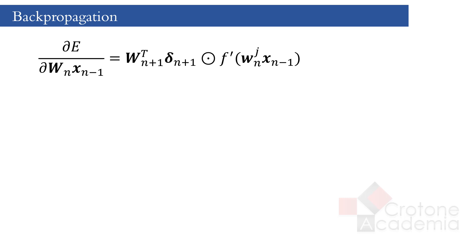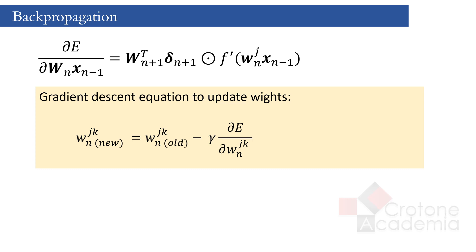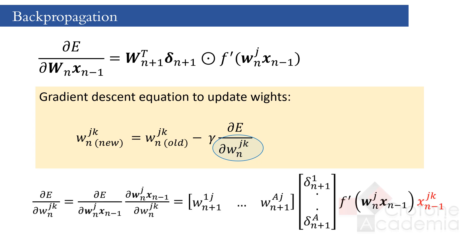Now we have an equation to calculate the derivative of the error with respect to Wn·Xn-1. However, when updating the weights using gradient descent, we need the derivative of the error with respect to weight Wnjk itself. Let gamma be the learning rate, which is a small constant. The previous derivative can be easily modified to find the derivative of the error with respect to Wnjk by applying the chain rule. It adds an additional term — the partial derivative of Wn·Xn-1 with respect to Wnjk — which simplifies to Xn-1(jk), as it is a quantity that doesn't vary with Wnjk.